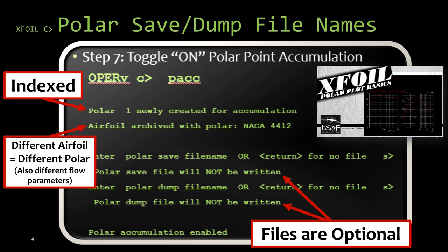In this step, it actually prompted us for the file name of both the polar save and the polar dump file. Since at that time we were not interested in actually creating these files, we just wanted XFOIL to save the points that we were creating, we went ahead and just hit enter or return without specifying a file name. And so what that did is that it turned on the polar accumulation without actually creating the polar save file or the polar dump file or setting it up to automatically save the points to these files. If we would have specified a file name, it would have created the file and saved data to it.